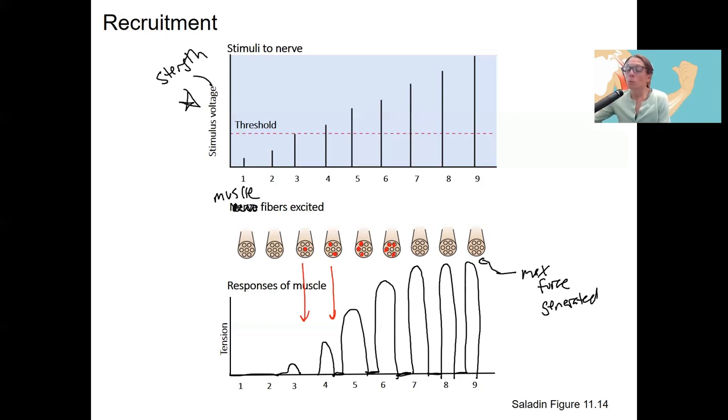So why is that? Because we've recruited all we can. This was my maximum here. So at this point, we've got all neurons on board firing, all motor units on board. We cannot recruit anymore because the entire muscle is contracting, generating force.